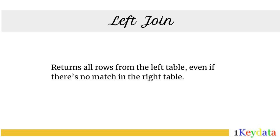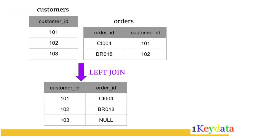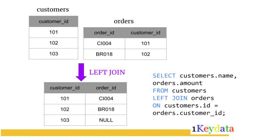A left join, on the other hand, returns all rows from the left table, even if there's no match in the right table. For unmatched rows, the columns from the right table will show null. This is great for identifying items in one table that don't have a corresponding match in another. In this example, all three entries in the customer table are in the result set. Customer ID 103 gets a null in the order ID column because customer ID 103 does not exist in the orders table. Here's the query we use for this.